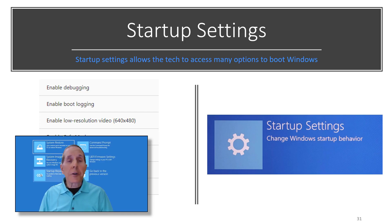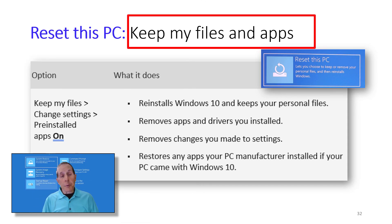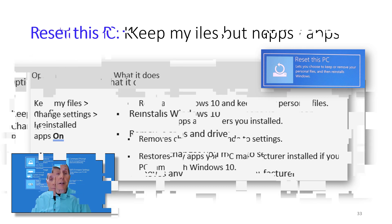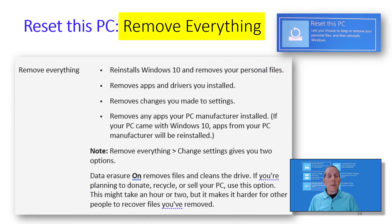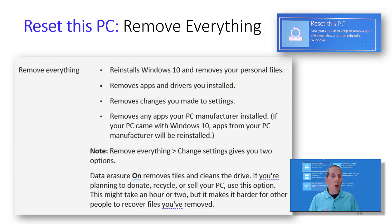Startup settings allow you to boot Windows in a variety of options. A favorite feature is the ability to reset this PC. You can choose to keep my files and apps — that's Windows Store apps, not apps downloaded from the internet. You can also reset the PC and keep your files but not Windows Store apps, or reset and remove everything. You can also enable data erasure, which takes longer but removes all personal information.